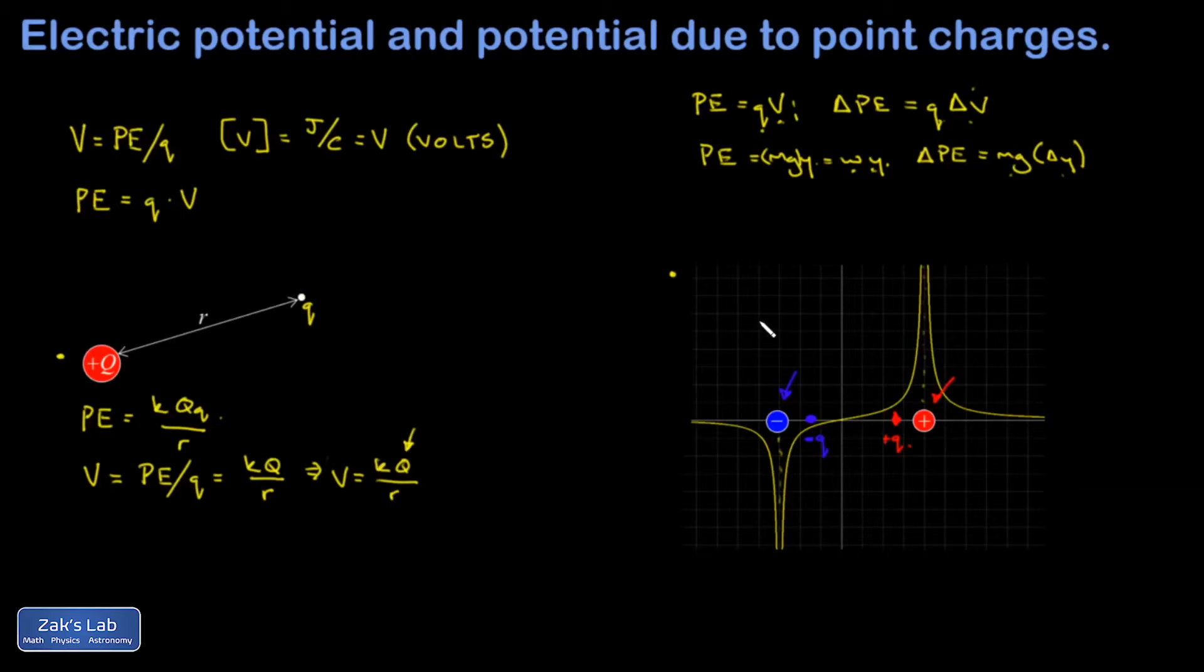So in summary, positive charges will go from high-potential to low-potential. Negative charges will spontaneously move from low-potential to high-potential. Let's wrap things up with a quick example.